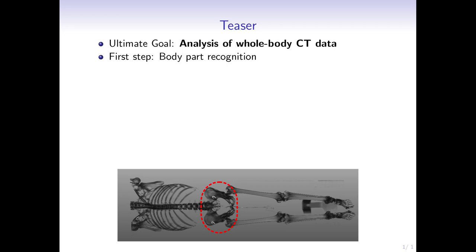The ultimate goal of our project is automated analysis of whole-body CT data. The first step in this project is body part recognition, such that the specific slices which correspond to specific body parts are extracted and sent for further processing, and the rest of the data can be disregarded.